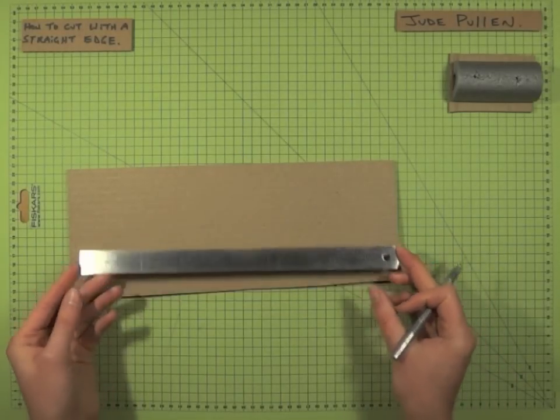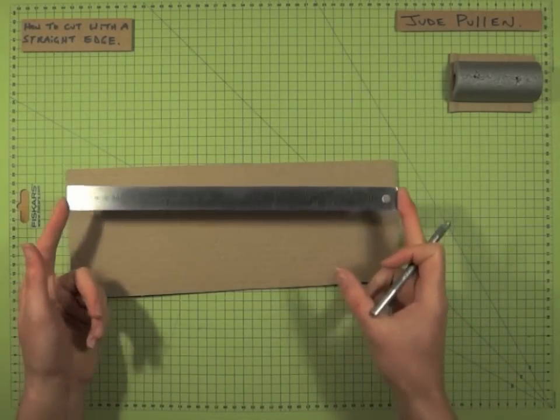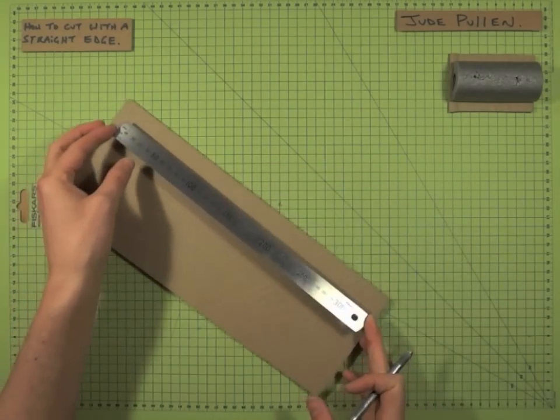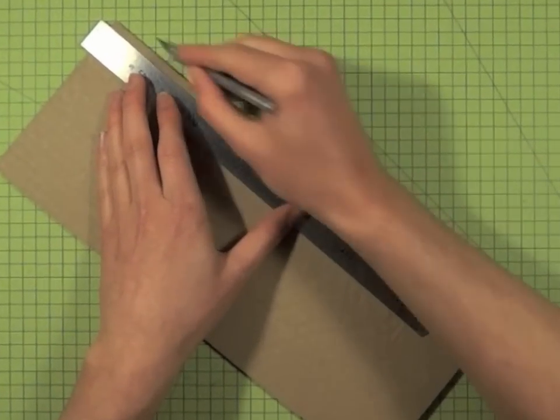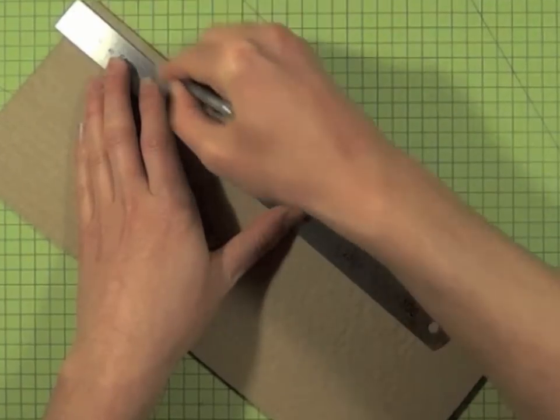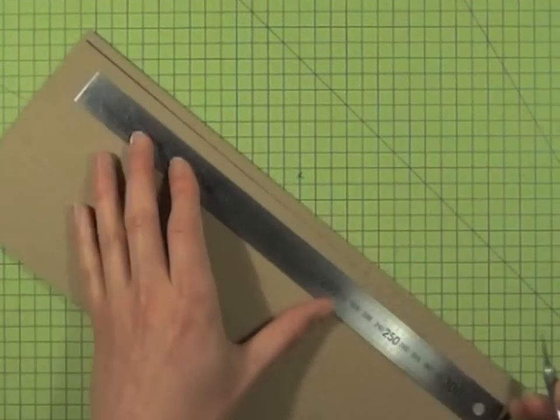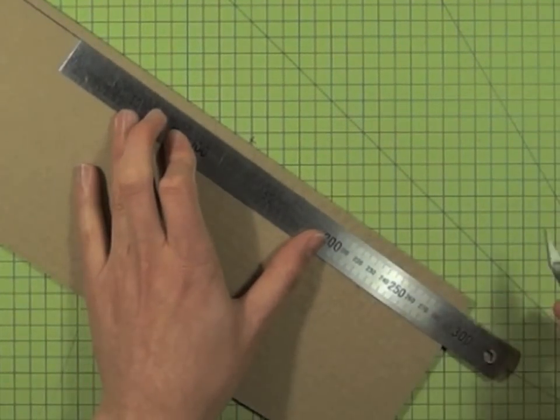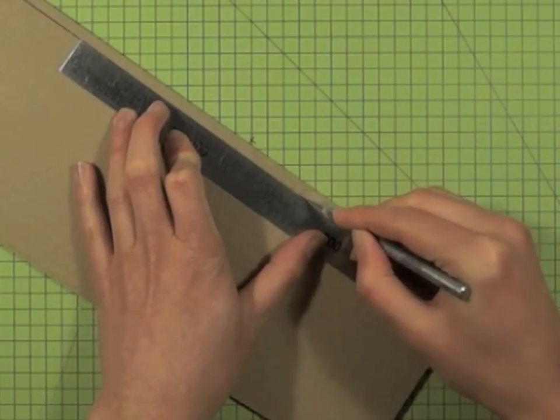One other thing to consider is that if the thing you're working on is actually bigger than the ruler you've got, you can end up cutting all the way down like this, and then poorly realigning it, and that means you don't get a straight edge.